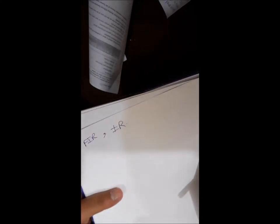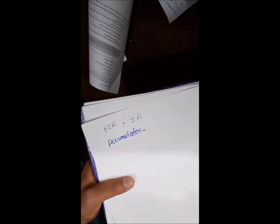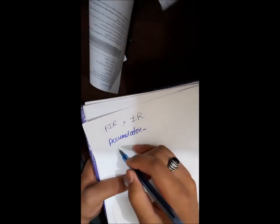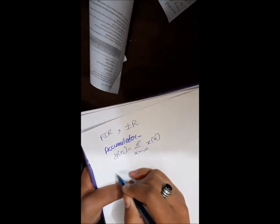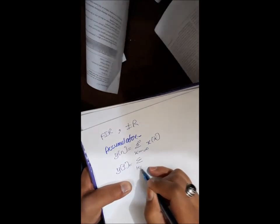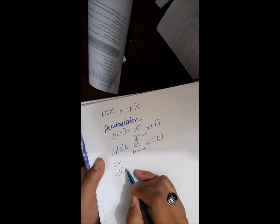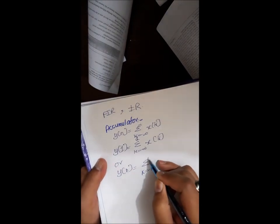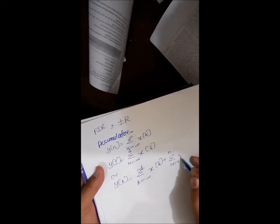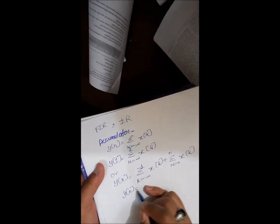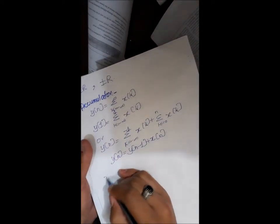So if we write for the accumulator: the formula here is given by y of n is equal to summation k is equal to minus infinity to infinity x of k. Or y of n is equal to summation k is equal to minus infinity to n minus 1 x of k plus summation k is equal to 0 to n x of k. So y of n finally will be y of n minus 1 plus x of n.